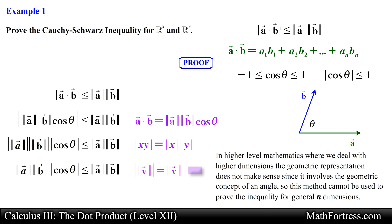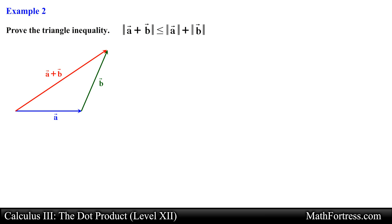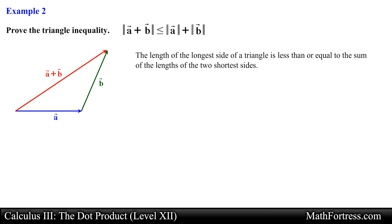One must use the algebraic definition or component definition of the dot product to prove this inequality for higher dimensions. In this course we will be dealing mainly with vectors in R squared and R cubed, so this proof will suffice. Let's go ahead and prove our next inequality: the triangle inequality.